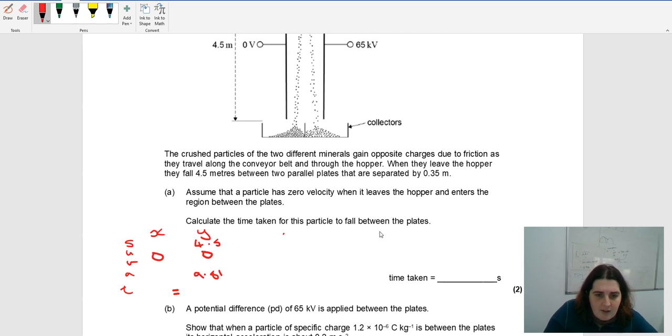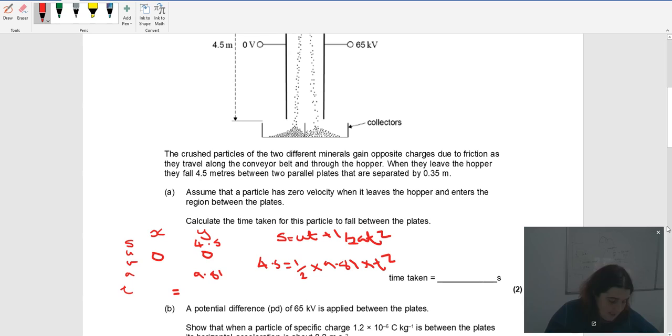I've got three bits of information, so I can use the formula. S equals UT plus a half a T squared. So 4.5 equals a half times 9.81 times T squared. So 4.5 times 2 divided by 9.81, then square root that answer.